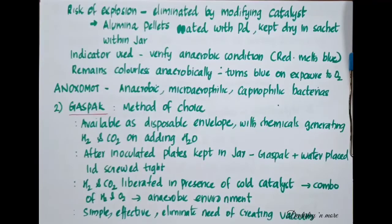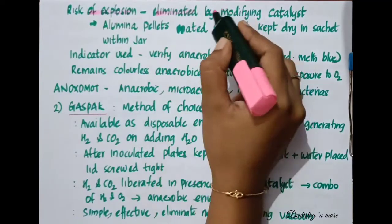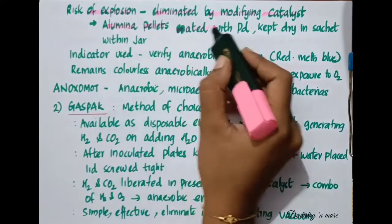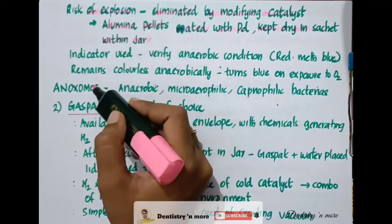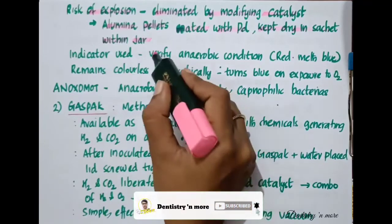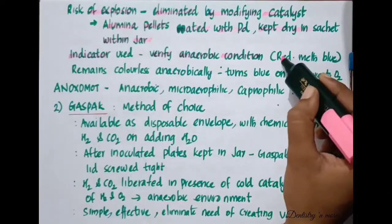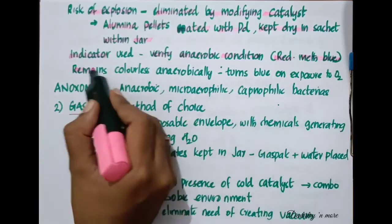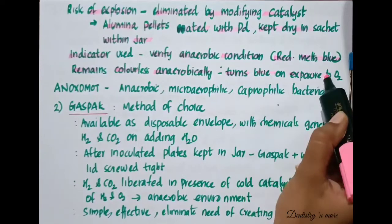Although it provides complete anaerobiosis, there is a risk of explosion. This risk is eliminated by modifying the catalyst — using alumina pellets coated with palladium, kept dry in a sachet within the jar. To verify the anaerobic condition inside the jar, we use indicators. The commonly used indicator is reduced methylene blue, which remains colorless anaerobically and turns blue on exposure to oxygen.